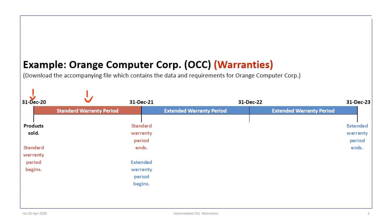That's for simplicity, because if a product is purchased today, its warranty would end one year from today. A product purchased a month from now would have its standard warranty expire in 13 months. So you always have a constant rolling of warranty periods. For illustration purposes, it's easier to think of sales at one point. When the products are sold, the standard warranty period begins, and then one year later, on December 31, 2021, the standard warranty ends and the extended warranty period begins. The standard warranty is one year, the extended warranty is two years, expiring December 31, 2023.